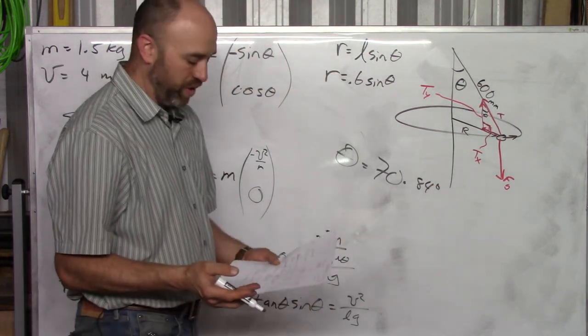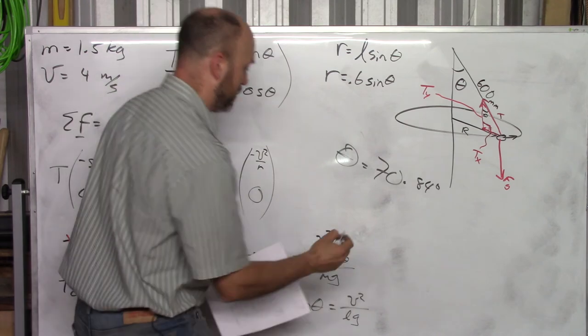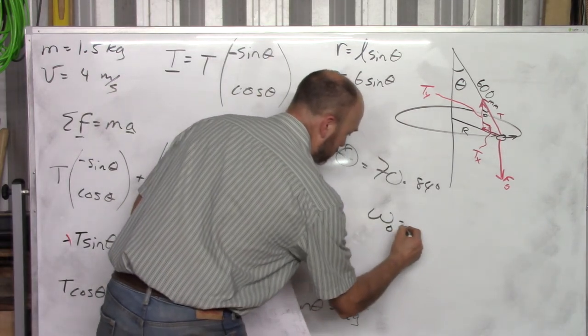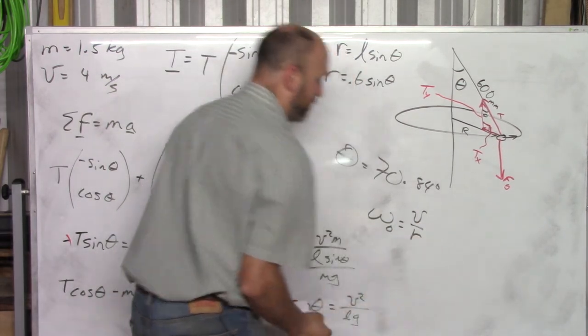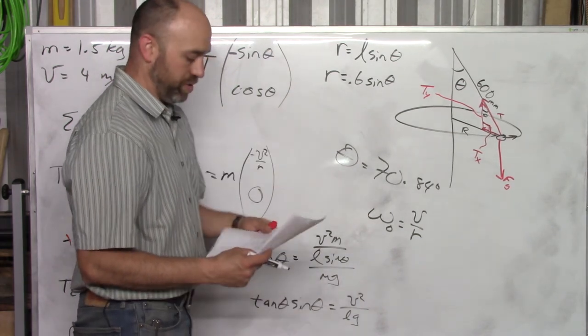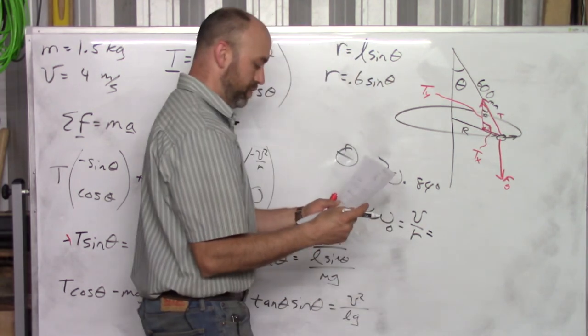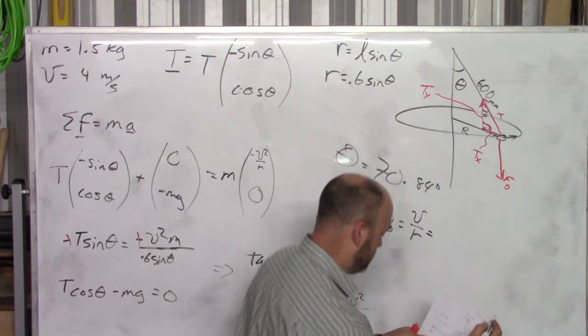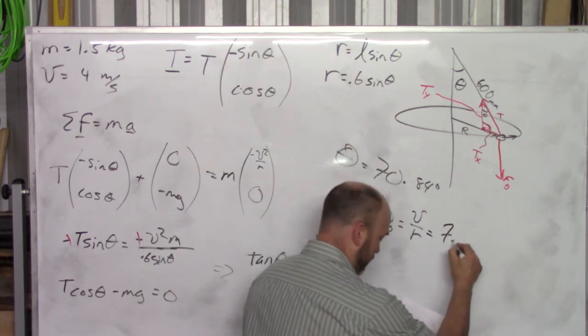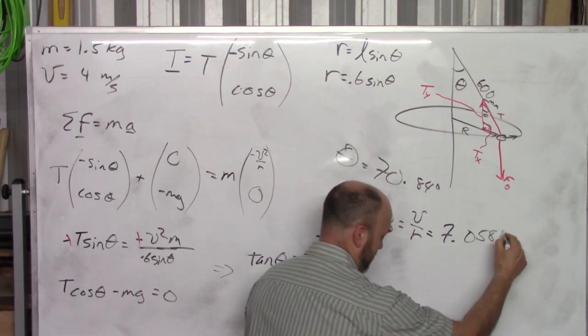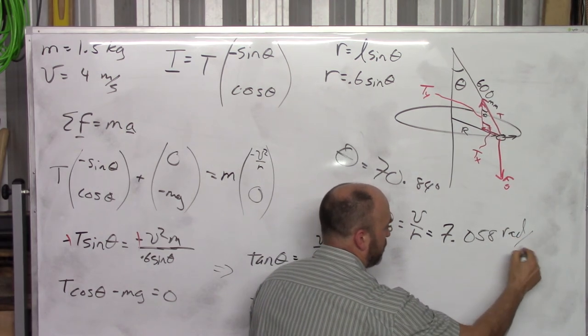Now as long as we're here, let's go ahead and find a couple other things. Let's find the initial angular speed. That's v over r. Now that you know theta, you can get r. Once you know r, you can get omega. So omega initial is 7.058 radians per second.